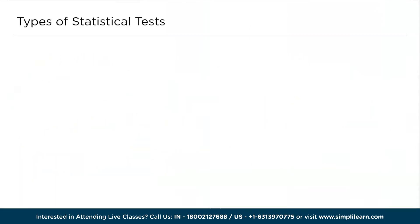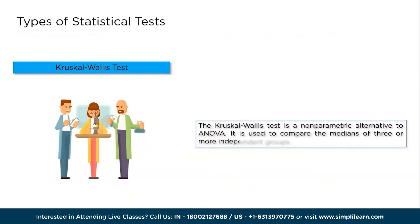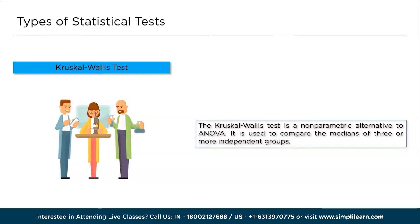Next we have the Kruskal-Wallis test. The Kruskal-Wallis test is a non-parametric alternative to ANOVA, used to compare the medians of three or more independent groups. It is an extension of the Mann-Whitney test for comparing two groups. The Kruskal-Wallis test does not assume that the data are normally distributed, making it suitable for non-normal distributions.